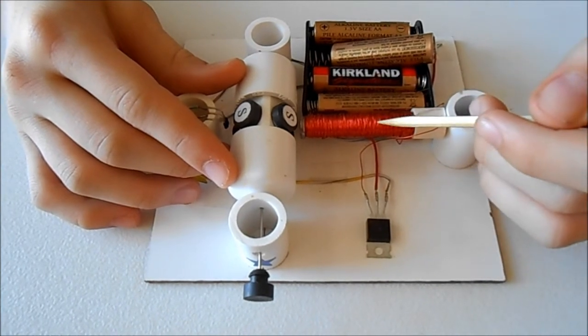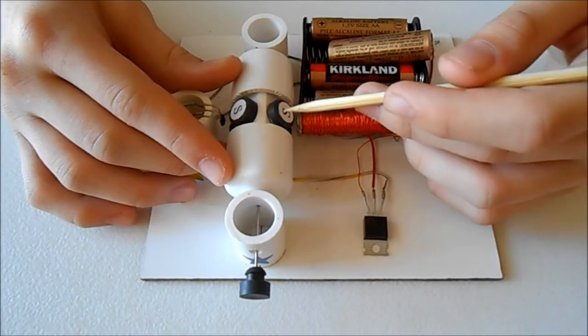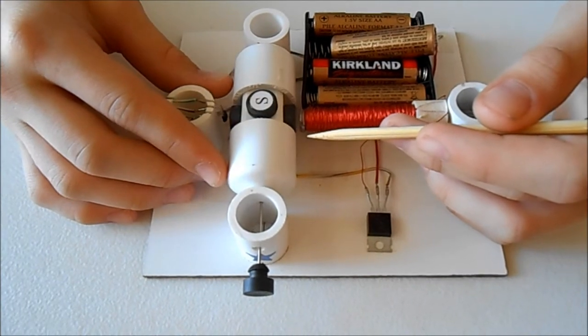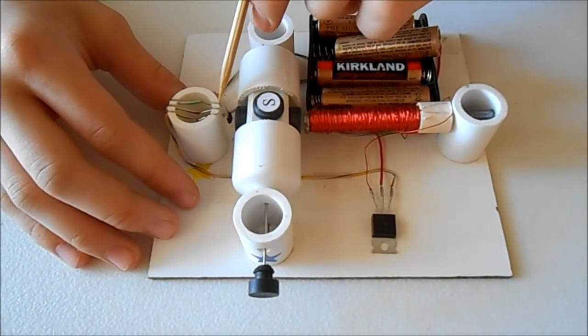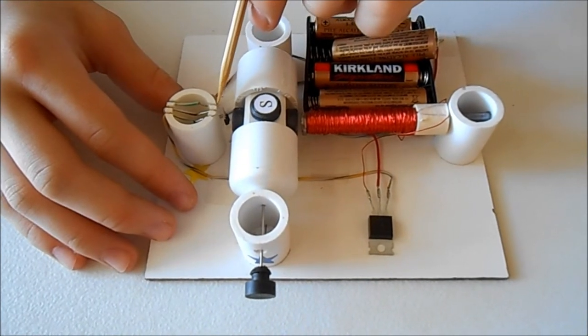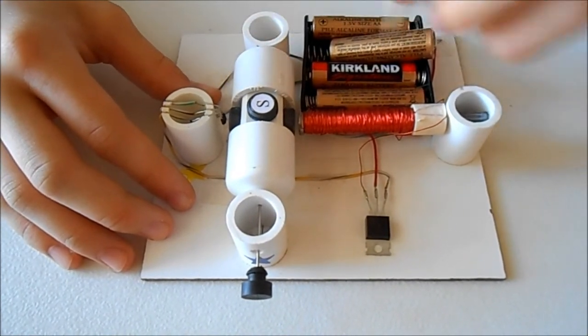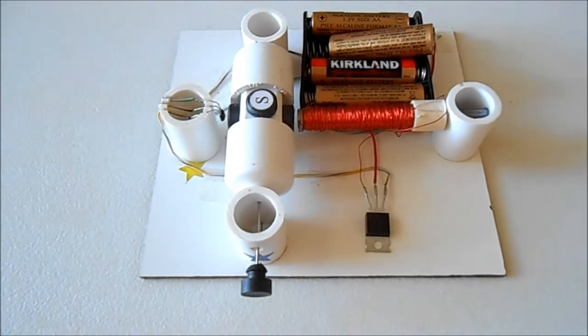The electromagnet is disabled but the rotor continues to spin due to inertia. It makes a quarter turn and then the next magnet comes within working range of the Hall Effect IC and turns it on. This process continues until the battery is disconnected.